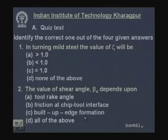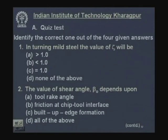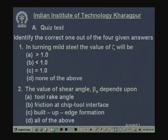Quiz question 1: In turning mild steel, the chip reduction coefficient zeta will be: greater than 1, less than 1, equal to 1, or none of the above? The correct answer is greater than 1, because zeta = A2/A1 and the chip always thickens due to compression of the work material ahead of the tool.